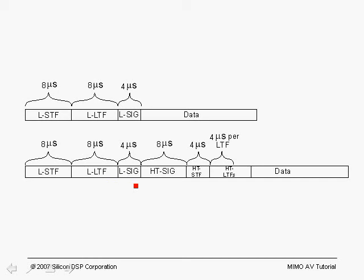4 microseconds for the legacy signal field. That's followed by the high throughput signal field, which is 8 microseconds. Then the high throughput short training field for AGC refinement, the long training fields used for estimating the H matrix, and the high throughput data.